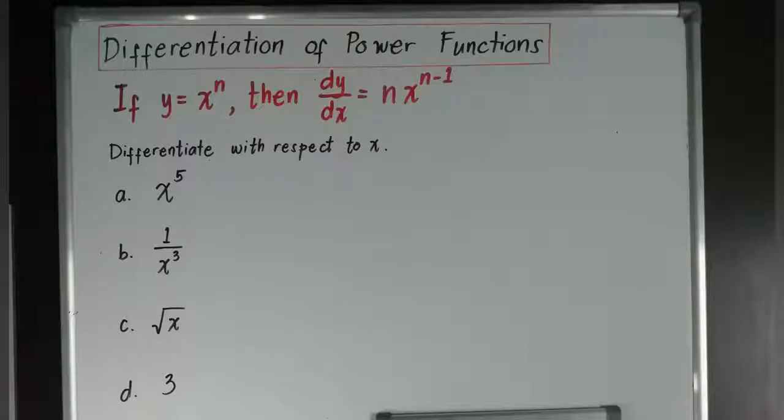When you say power functions, these are values of y in terms of x with a power. So for example, x to the power of 5. If this is equated to y, then it will become y equals x power of 5. What will be the differentiation of x power of 5?